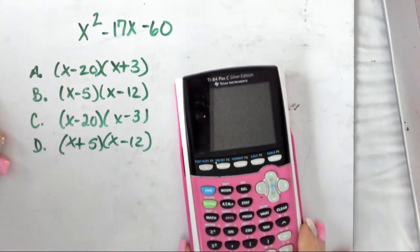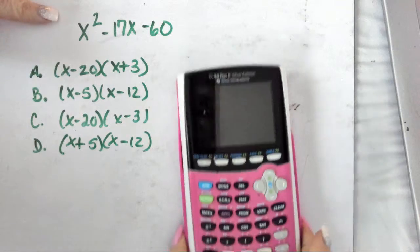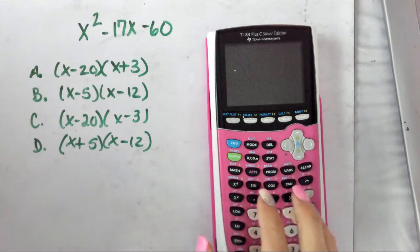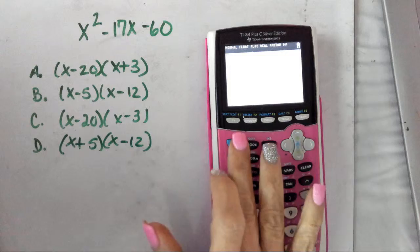Alright, so here we go. When you get one like this and it wants to know which form is equivalent, I know we haven't got to factoring yet, but it doesn't even matter because you know how to use a calculator.